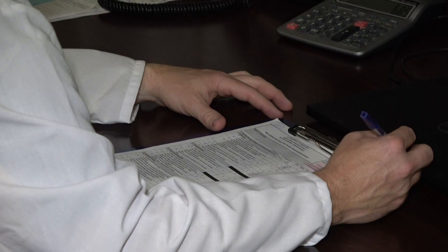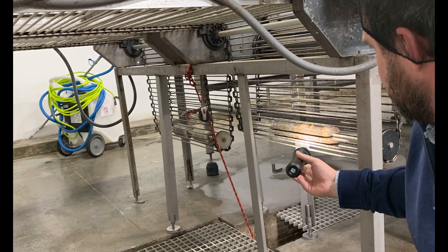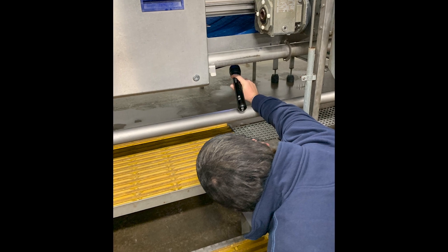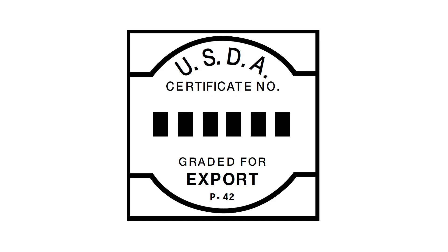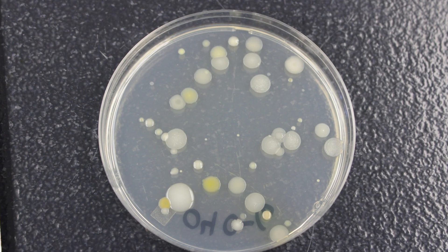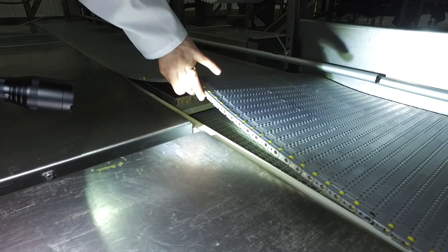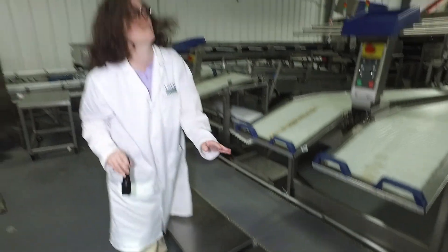AMS sanitation requirements are meant to protect the integrity of the USDA grade mark by requiring additional sanitation expectations at facilities that utilize AMS voluntary grading services. To meet these goals, AMS inspectors will assess for voluntary grading program requirements during the pre-operational sanitation inspection and throughout processing operations by utilizing organoleptic inspection assessments. Organoleptic inspection assessments include sight, smell, and touch.